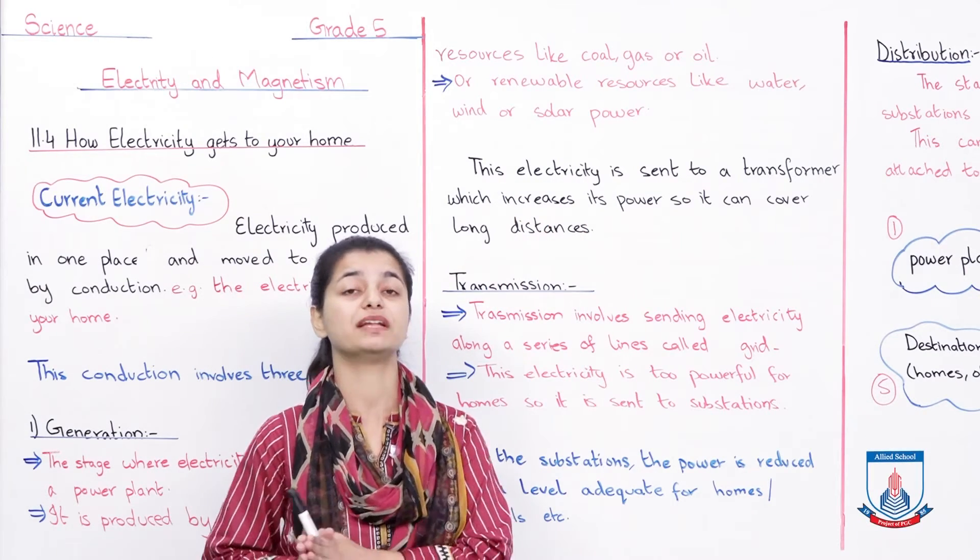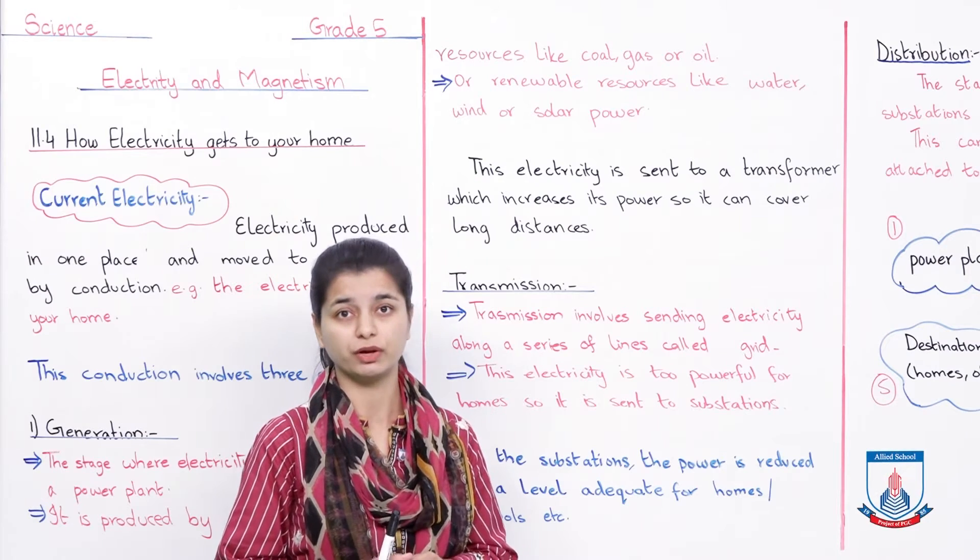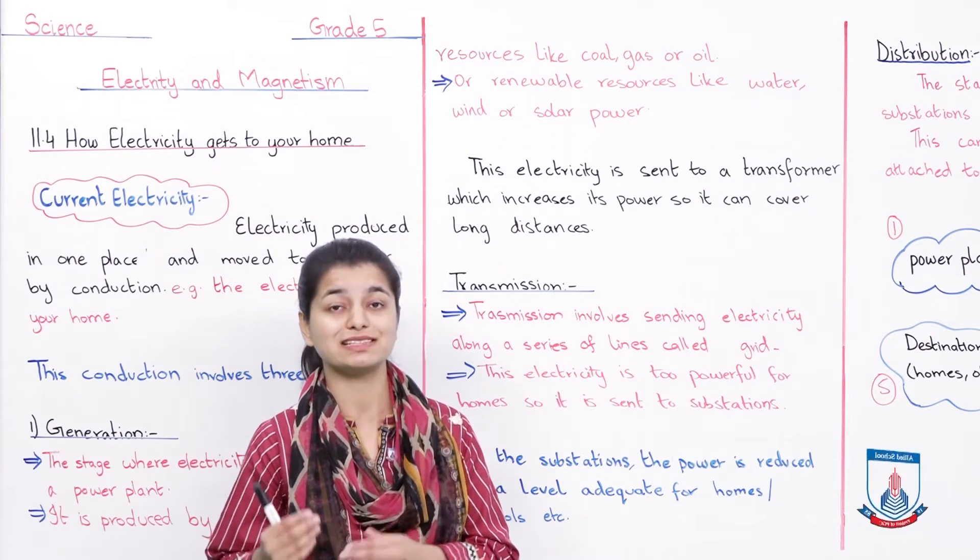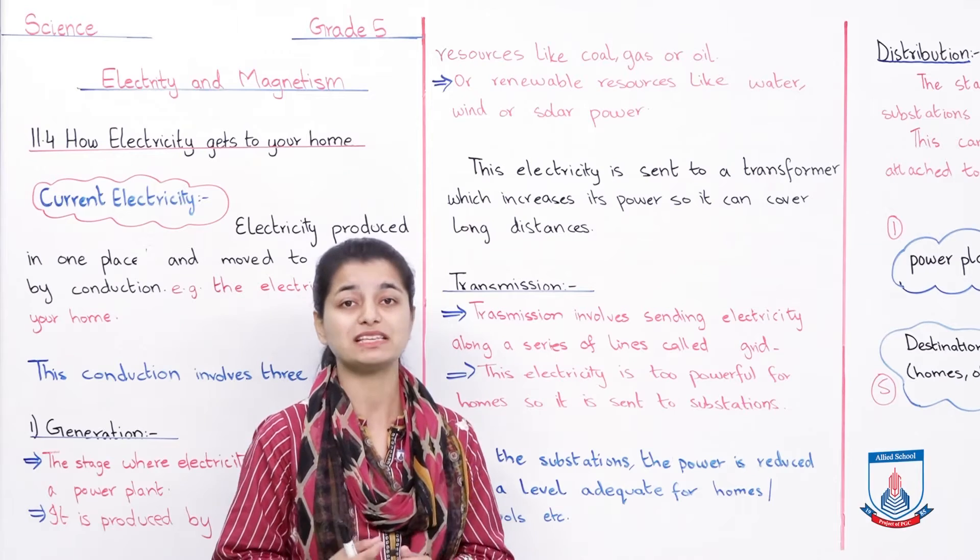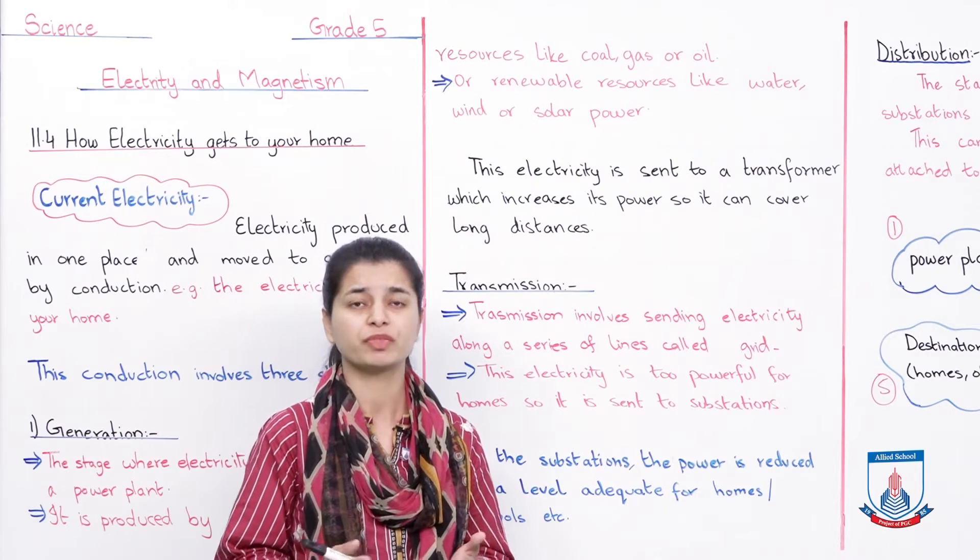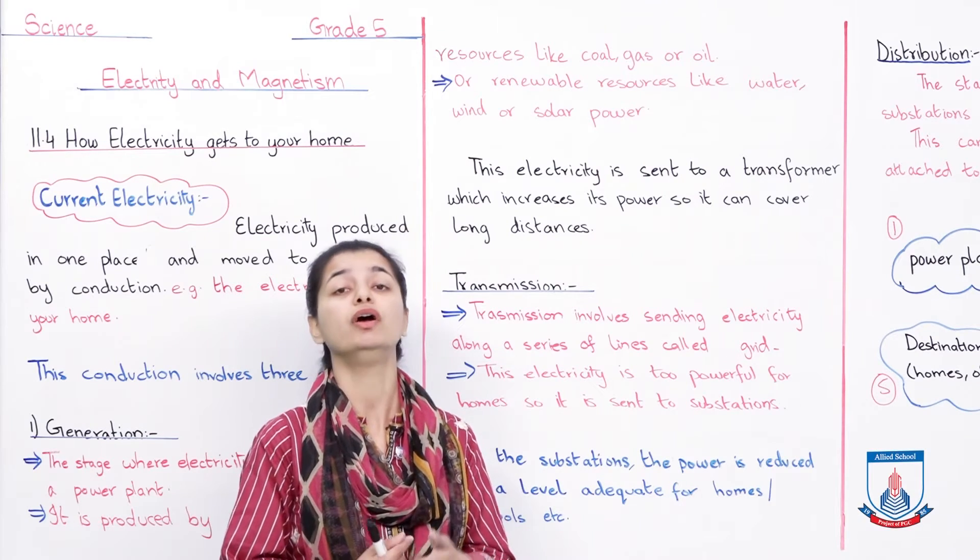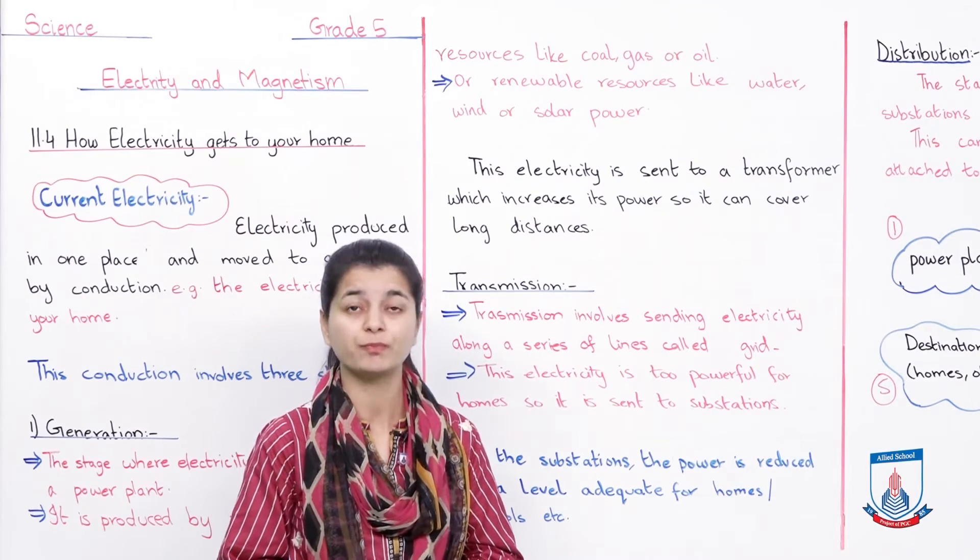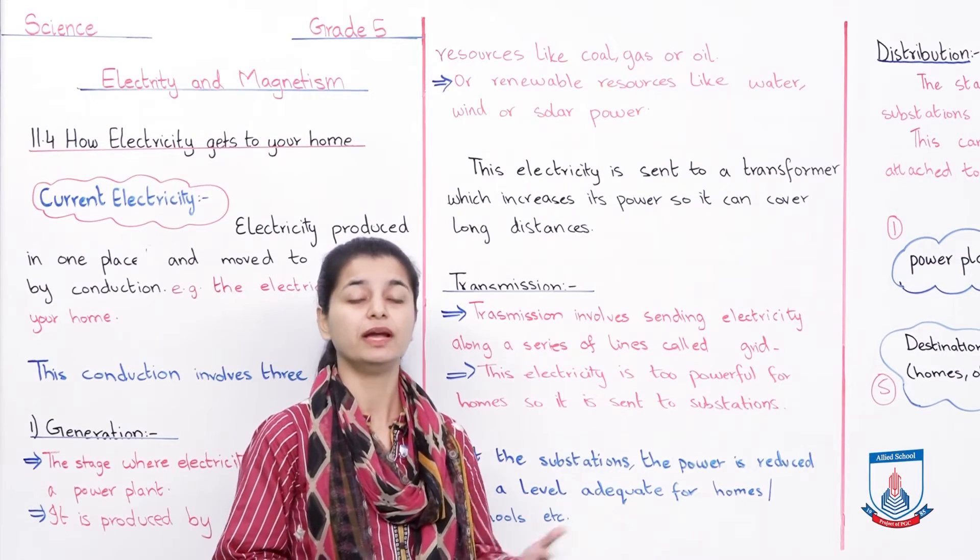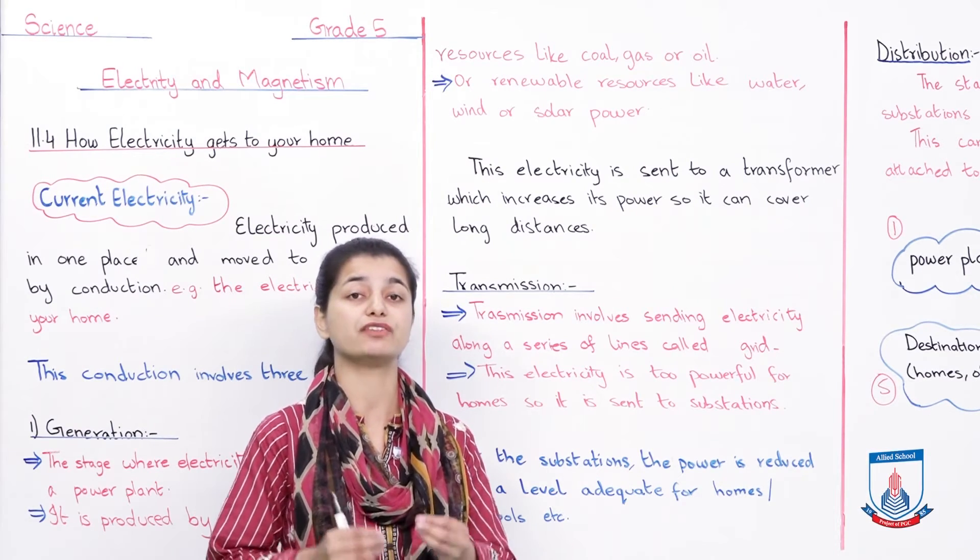We've discussed renewable and non-renewable resources many times in class. One option is to use non-renewable resources like coal, oil, and gas. Mining and extracting them from underground is a very pricey process. However, renewable resources like wind, water, and solar energy - do you have to buy them? No. Solar energy is always available, you can use solar panels. Wind energy is available, and wind power plants are often built far from cities where wind blows strongly. Similarly, water and sunlight.